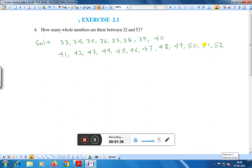These are the numbers between 32 and 53. Now how many numbers are there? You count number 1. This is 1, 2, 3, 4, 5, 6, 7, 8, 9, 10, 11, 12, 13, 14, 15, 16, 17, 18, 19, 20. Right?